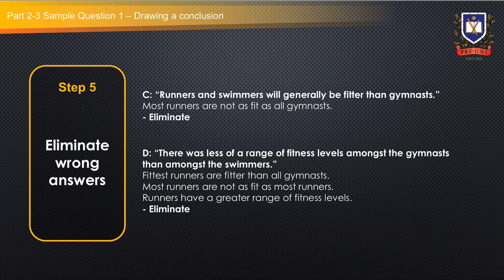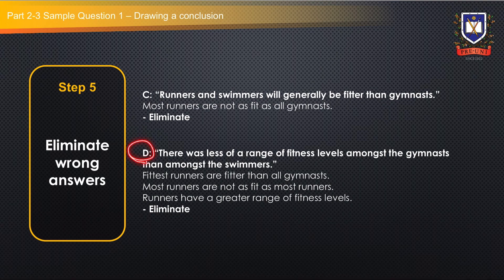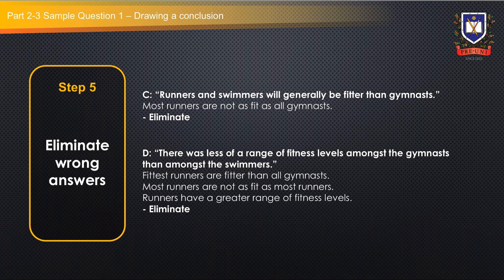Before we move on, let's quickly go through why options C and D are incorrect. Option C — runners and swimmers will generally be fitter than gymnasts — is incorrect as most runners are not as fit as gymnasts. Option D — there was less of a range of fitness levels amongst the gymnasts than amongst the swimmers — is incorrect since runners have a greater range of fitness levels as deduced in option B. Therefore, option B is correct.